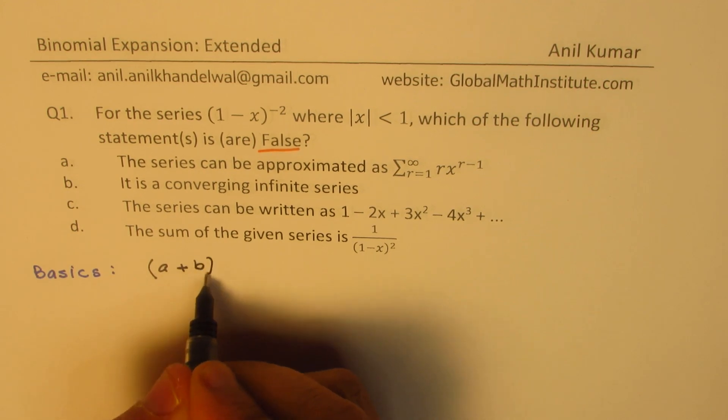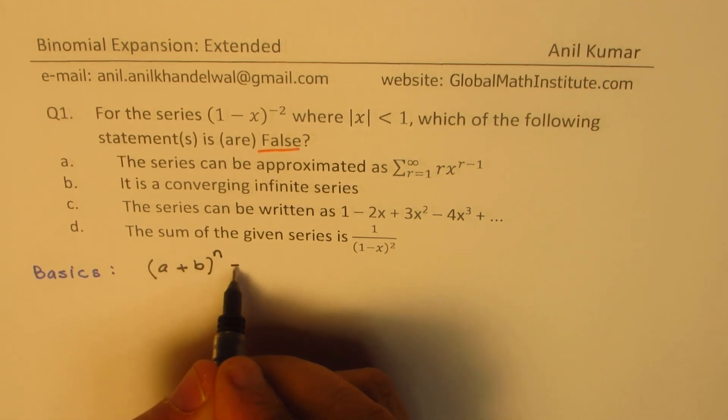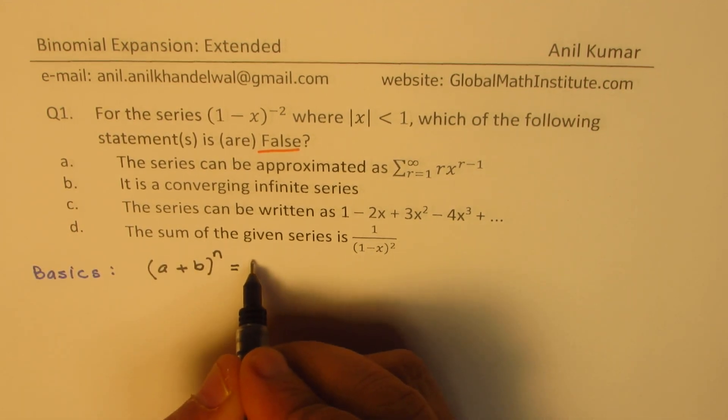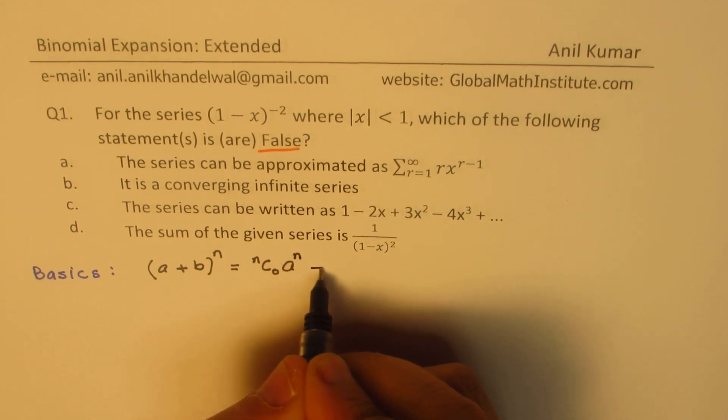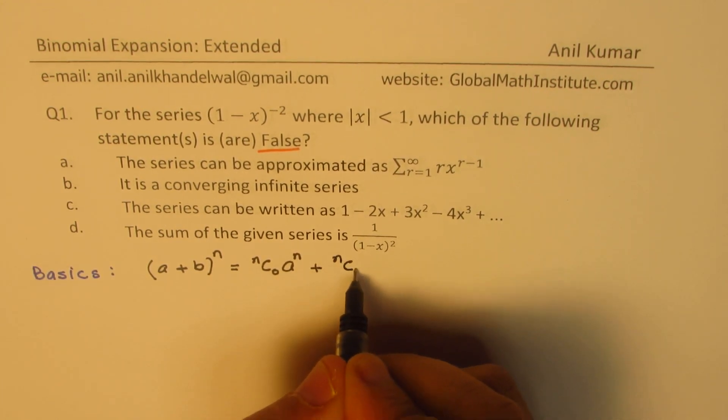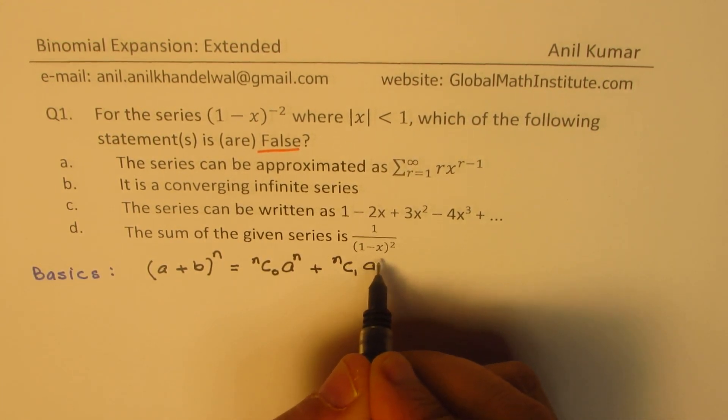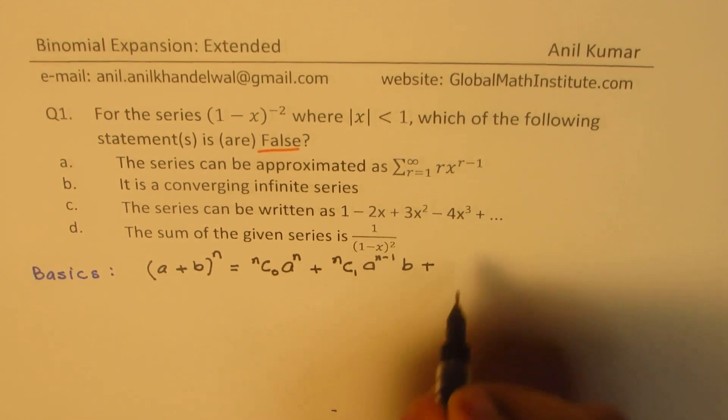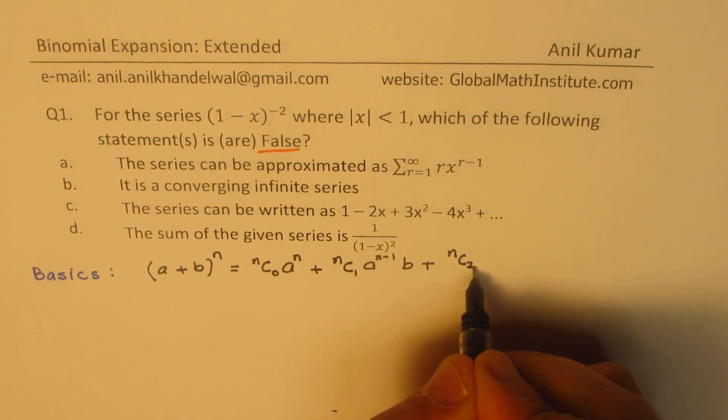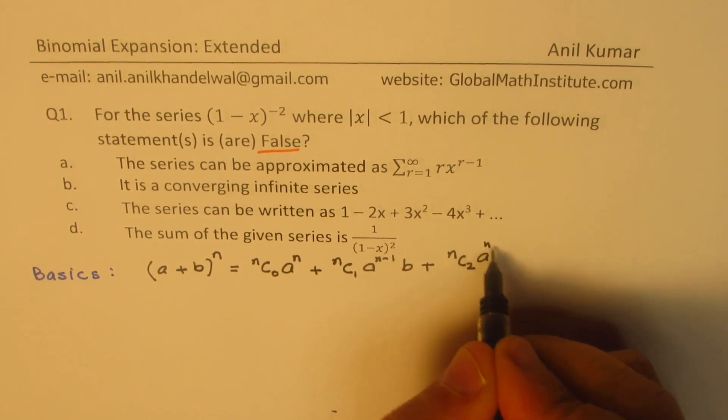Generally, you know that a binomial series (a + b)^n can always be written as nC0·a^n + nC1·a^(n-1)·b + nC2·a^(n-2)·b² + and so on.